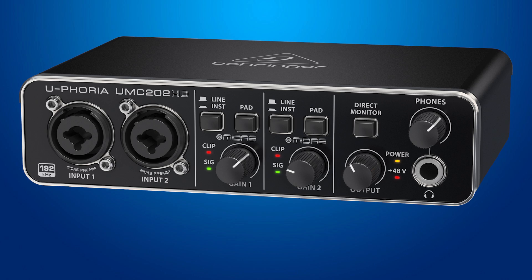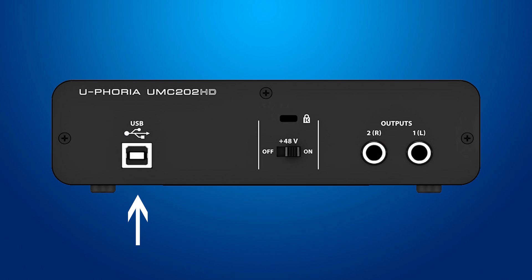My inexpensive go-to audio interface is the Behringer UMC202HD. Just plug in your XLR or quarter inch feed from your mixer, plug in the USB cable, install the drivers, and you are set. Simply add the audio device in your streaming software and you are done. You can pick up that audio interface on Amazon through the link in the description. At this point I'm going to shift my focus from capturing audio from analog mixers to capturing audio from digital mixers.